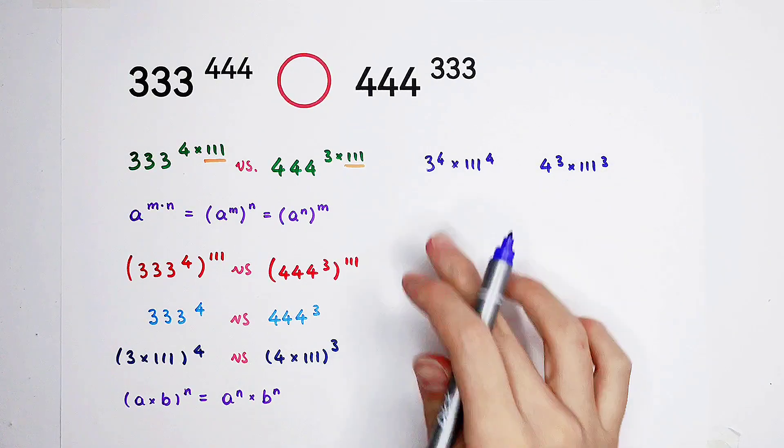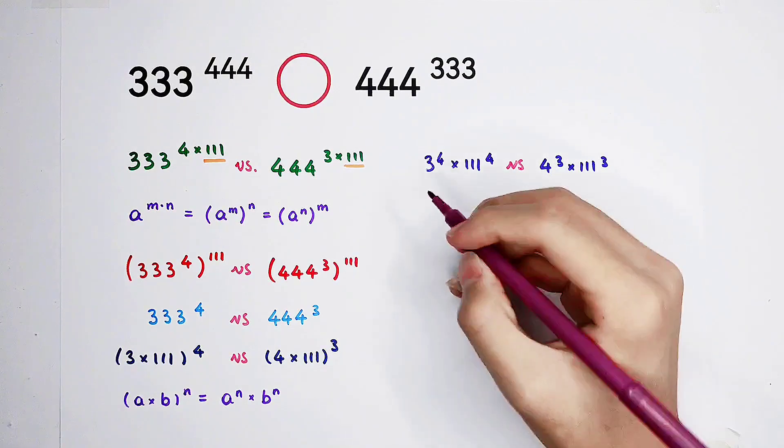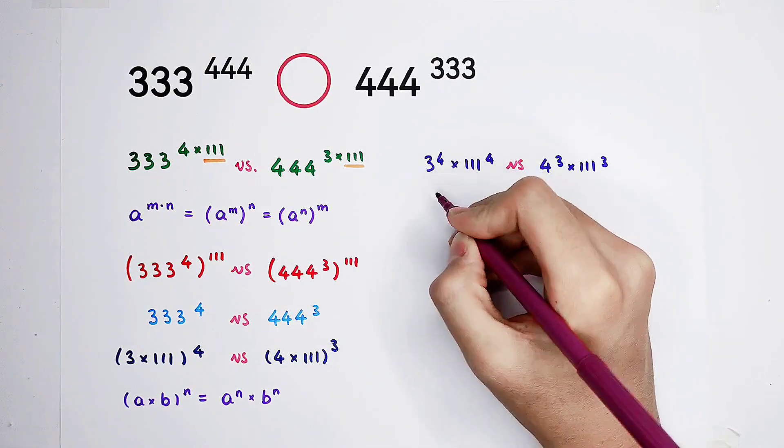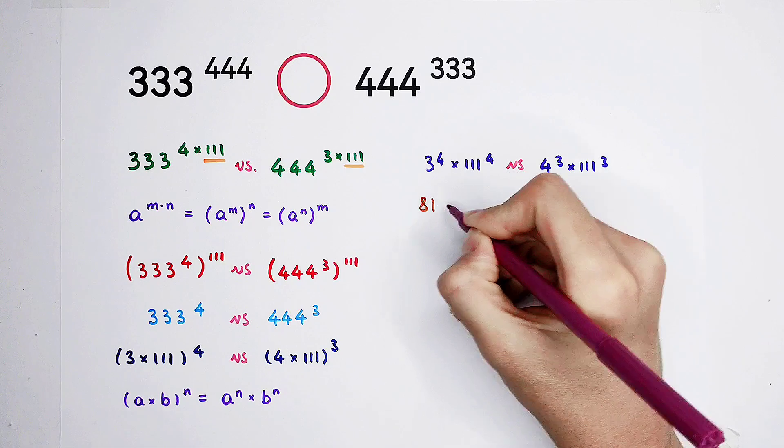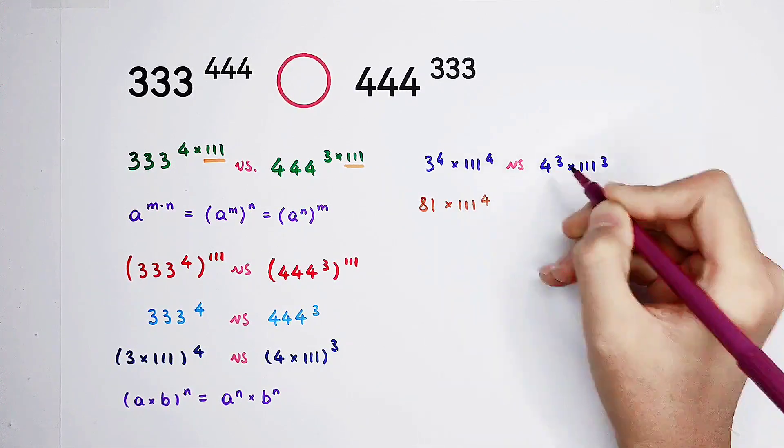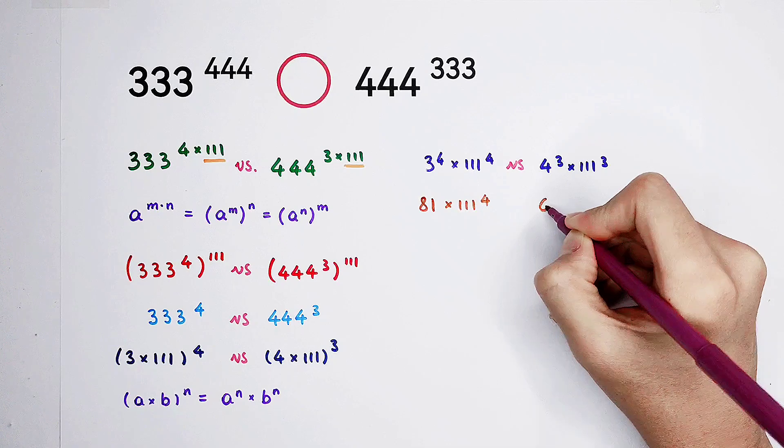Now, we only have to compare these two guys. Very good. We can see 3 to the power of 4 is what? 81. 4 to the power of 3, what? 64.